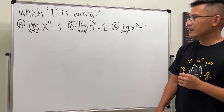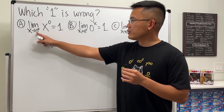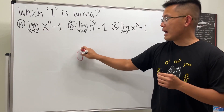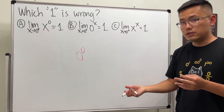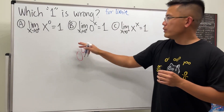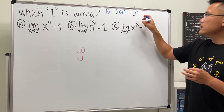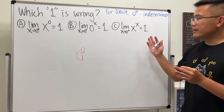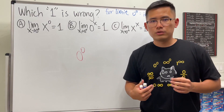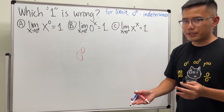Before we continue, I want to make this super clear. If we just put zero into all the x's in these three limits, we get zero to the zero's power in all three situations. When we get zero to the zero, this is an indeterminate form, meaning we cannot draw any conclusions unless we do more work. That's why zero to the zero power is indeterminate.